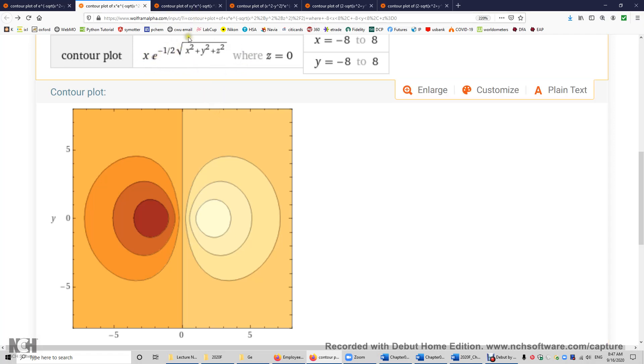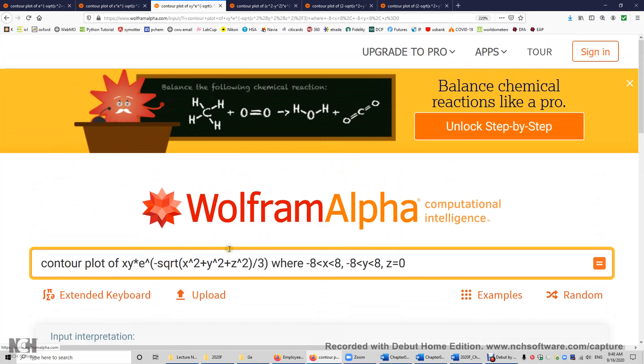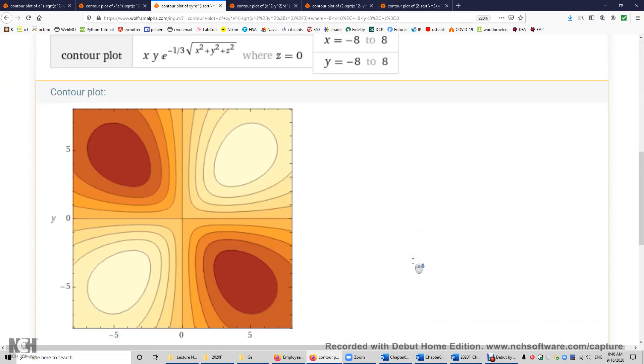Now let's look at some d orbitals. This is dxy. The function is x times y times e to the power of negative r over 3. Again, I set z to be 0. You are looking at dxy. So again, x times y times e to the power of negative r over 3. Pay attention to the two nodes here. One node, two nodes. So this is when y is equal to 0. This is when x is equal to 0.